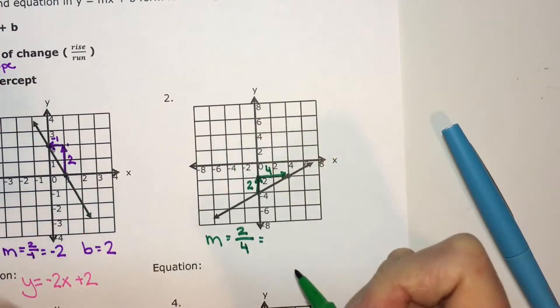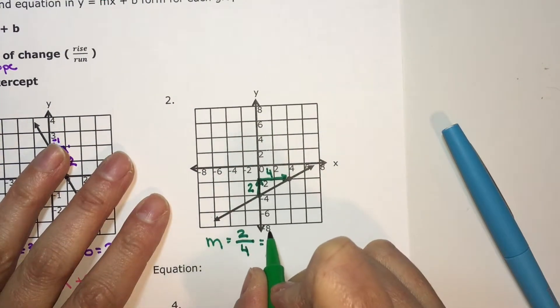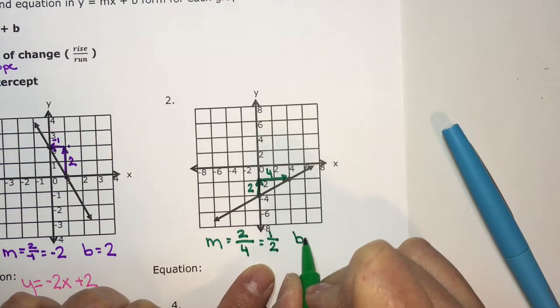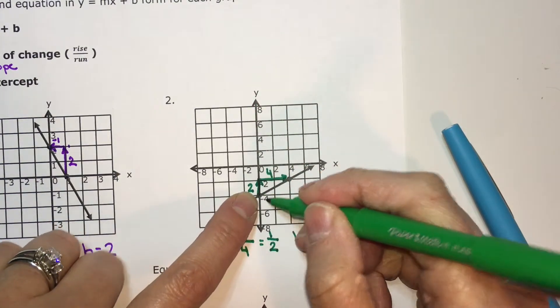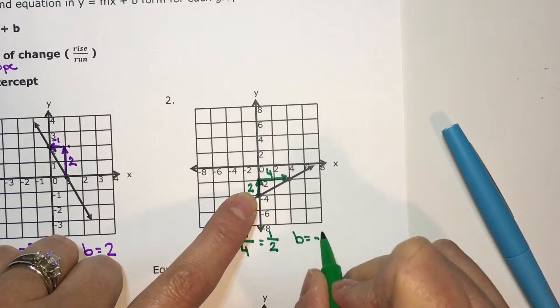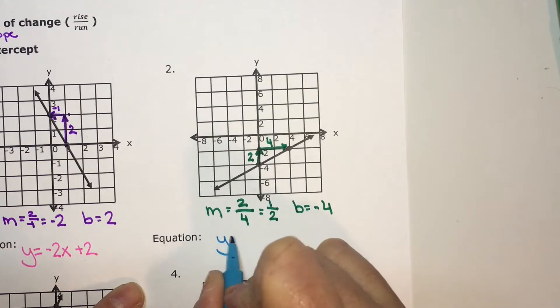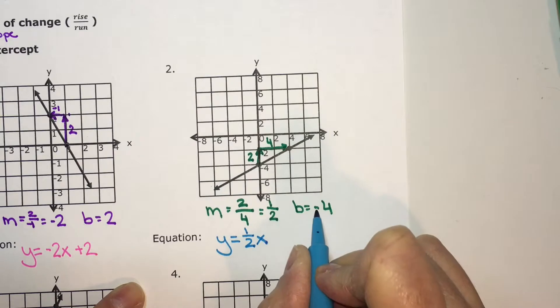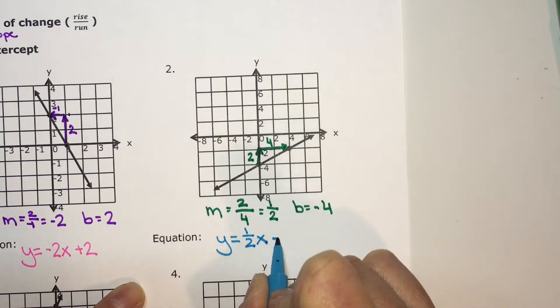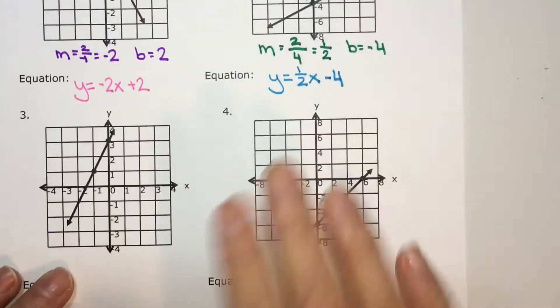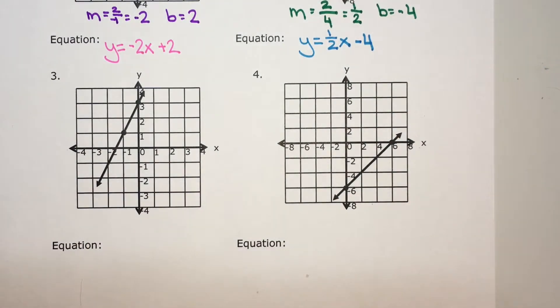I can reduce this by dividing top and bottom by two. Two divided by two is one. Four divided by two is two, so my slope is one-half. And my y-intercept, the point where the graph goes through the y-axis, that value is negative four. So the equation is y equals one-half, is the slope, x. Since it's negative four, you put minus four. Hopefully you're getting this, and we'll just do two more.